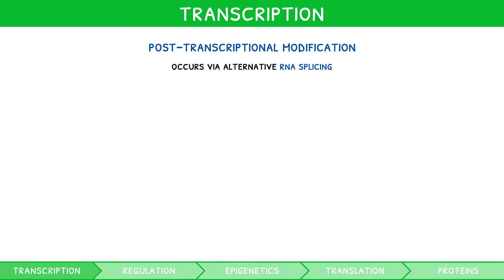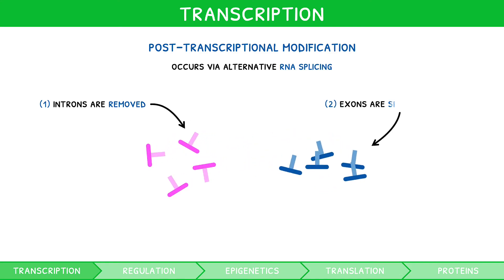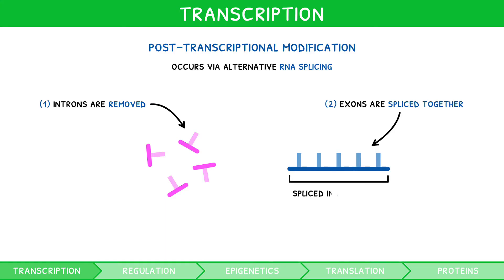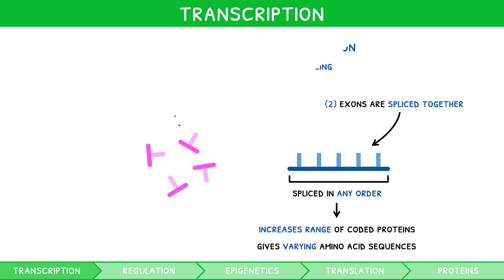Post-transcriptional modification occurs via the process of alternative RNA splicing, which occurs only in eukaryotes. During this process, the non-coding introns are removed, leaving the coding exons which are spliced together. It is key to recognise that exons can be spliced in any order. Thus, alternative mRNA splicing increases the range of proteins that can be coded for by a single gene, because not all exons need to be included, leading to varying amino acid sequences which subsequently alter translation.